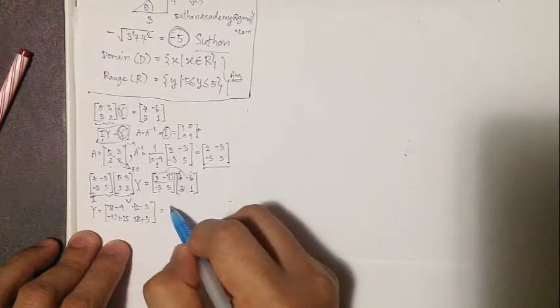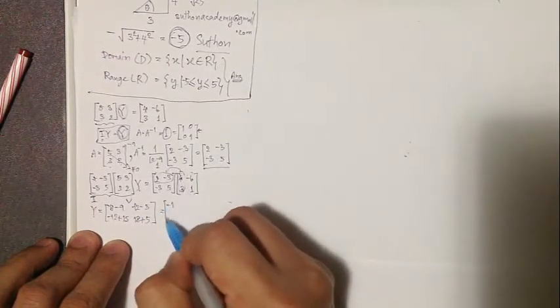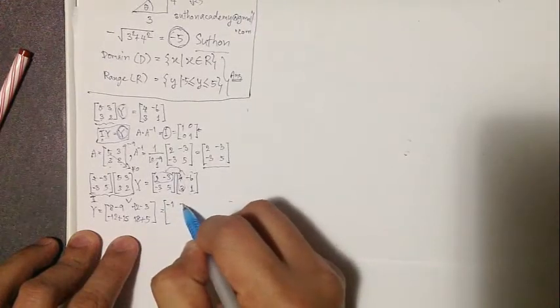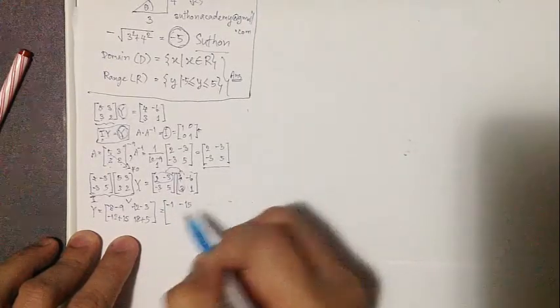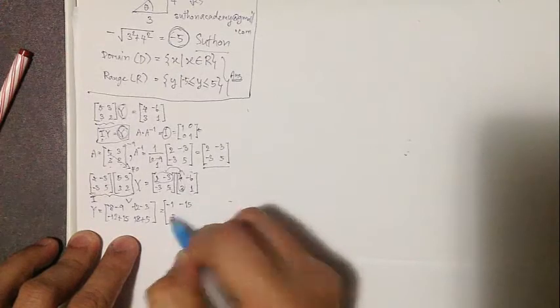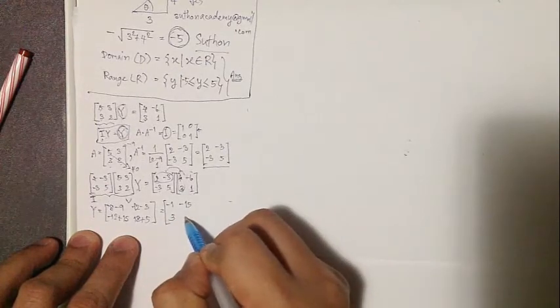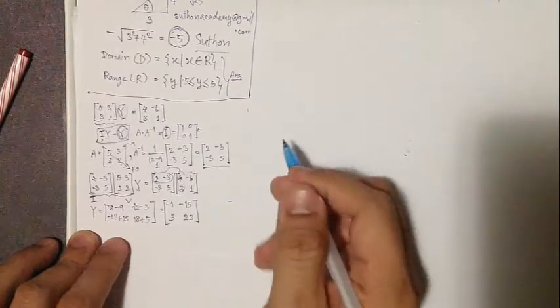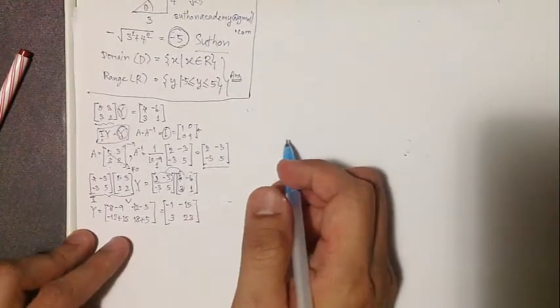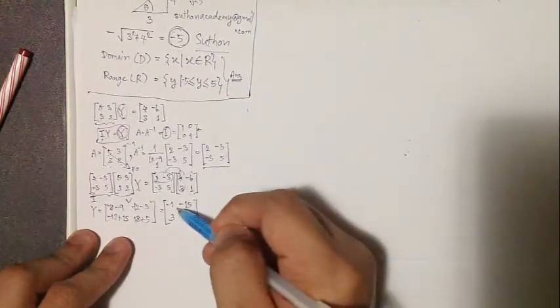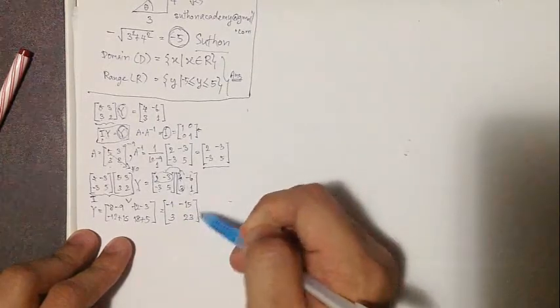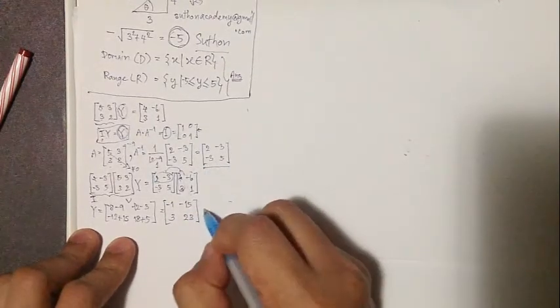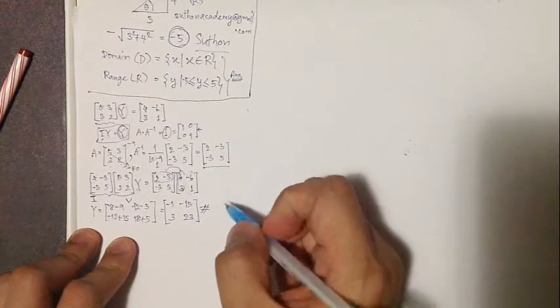The matrix Y will become [-1 -15; 3 23]. I will check the answer again: -1, -15, 3, and 23. Okay, this is the answer.